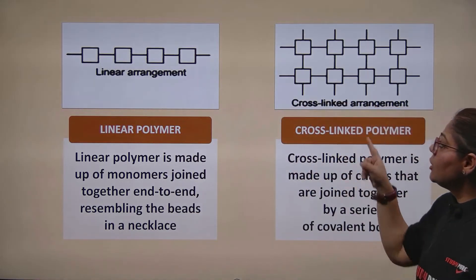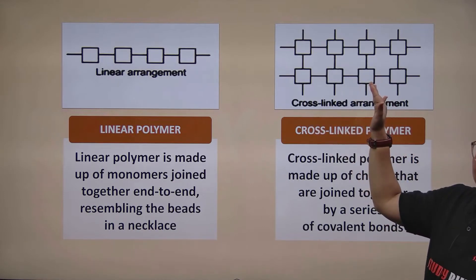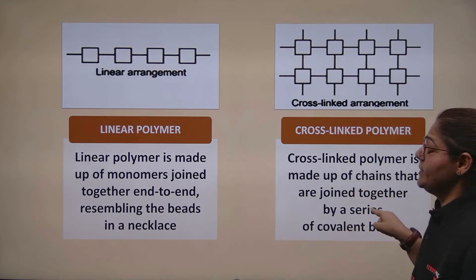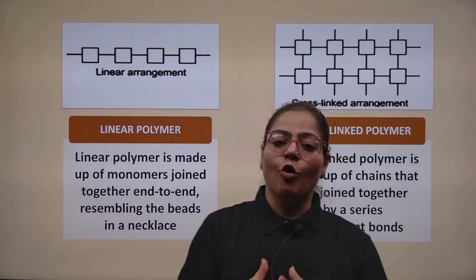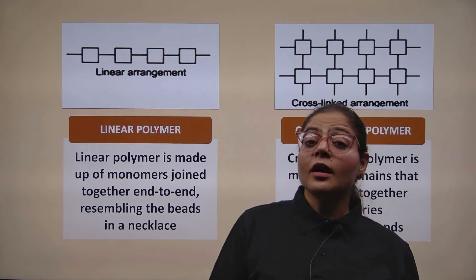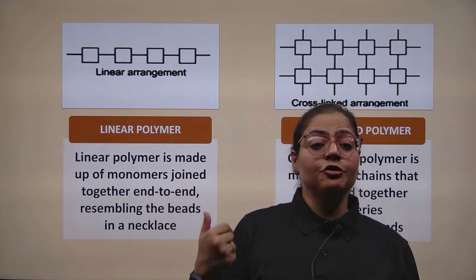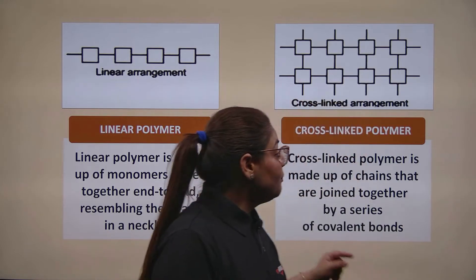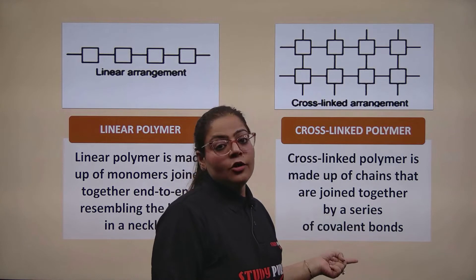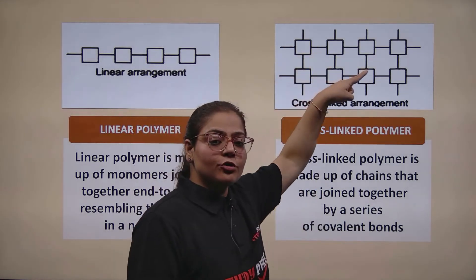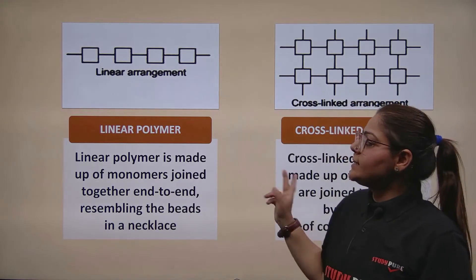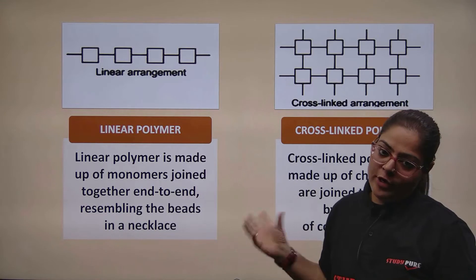The second arrangement is cross-linked, and you can see the differentiation easily in the picture. A cross-linked polymer is made up of chains that are joined together by a series of covalent bonds. The important point is the type of bonds — covalent bonds. We won't go into depth on covalent bonds here because you will study them in senior classes, but understand that cross-linked arrangements occur where the joining of monomers happens through covalent bonds — and the arrangement has to be like this for covalent bonds to be fulfilled. These are the two ways to join monomers to form a polymer.